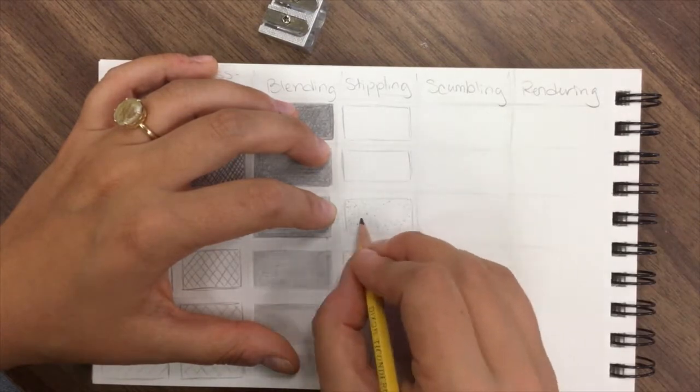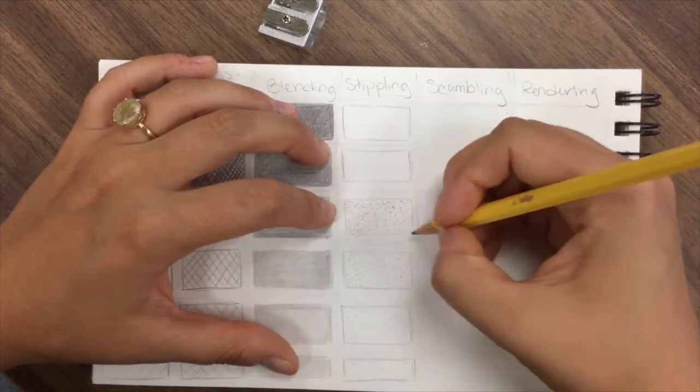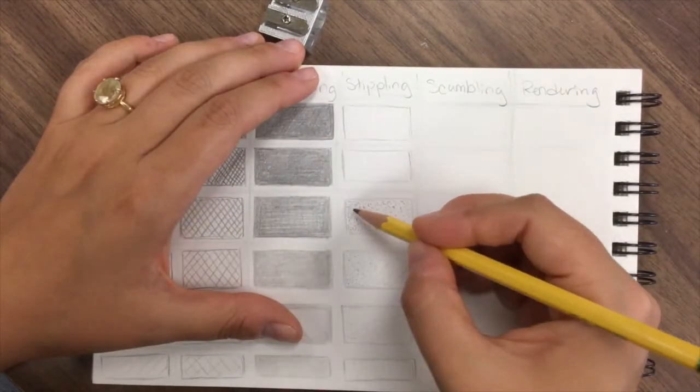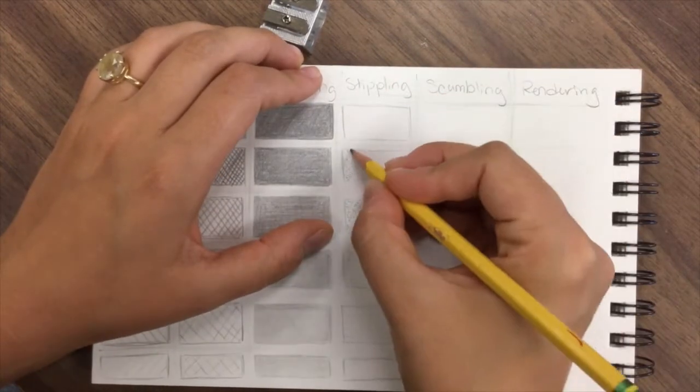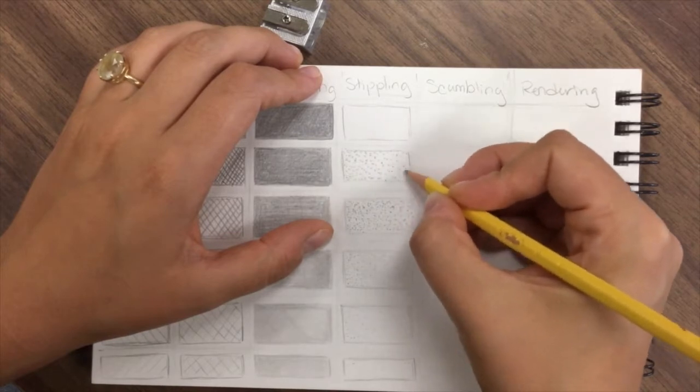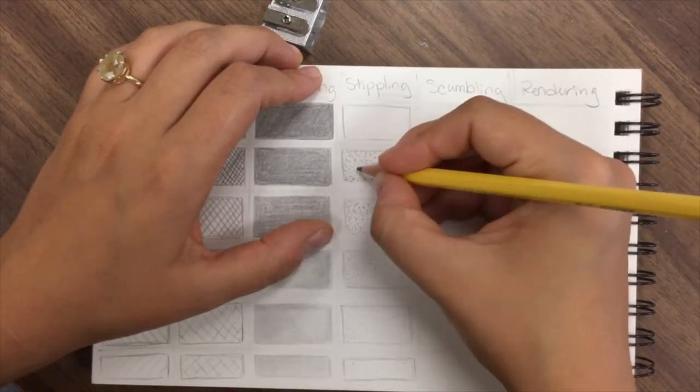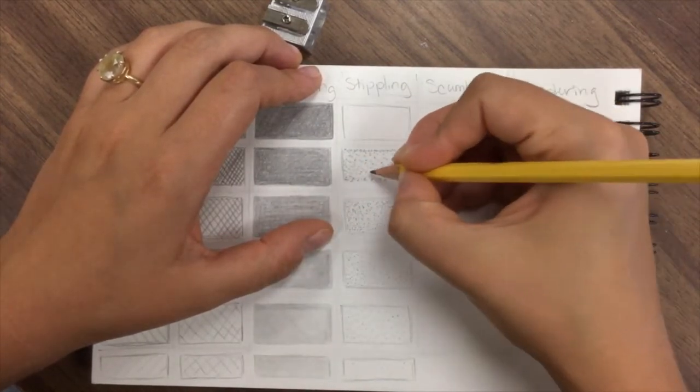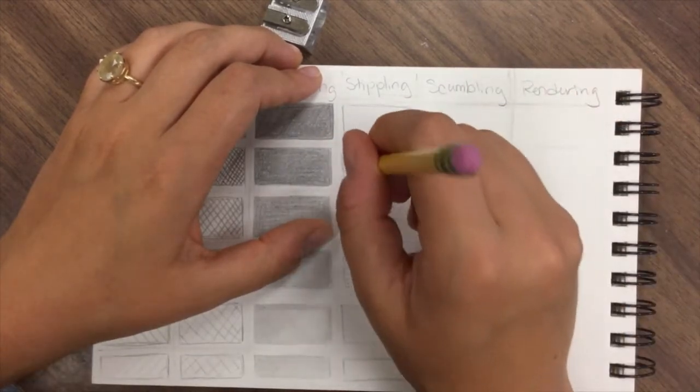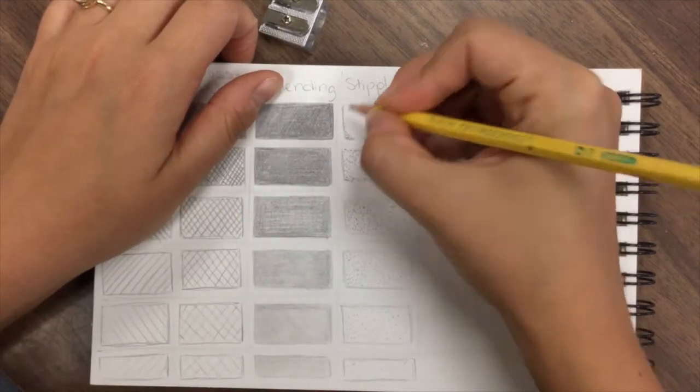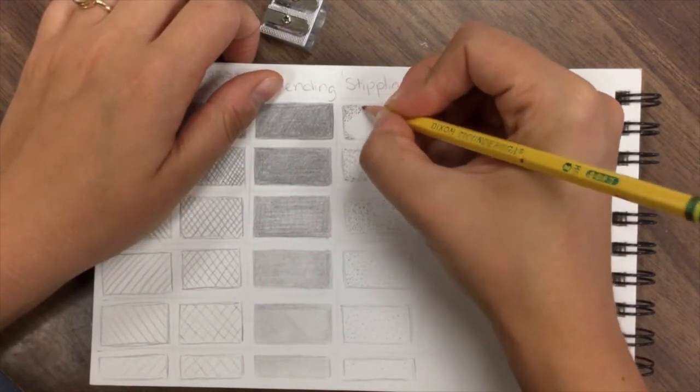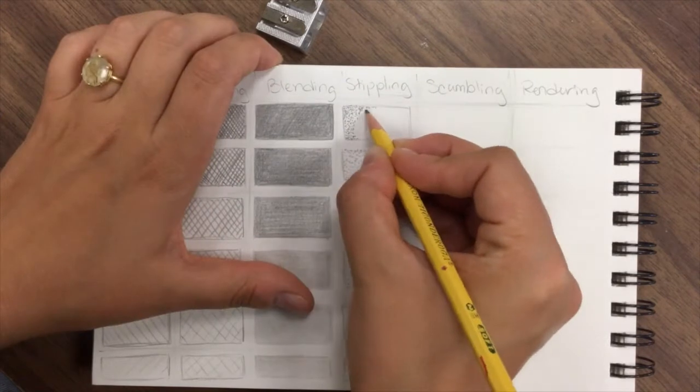Notice that you want to really space those dots, and then every time you go up in darkness, just fill in a few more dots. Overall, stippling is achieved by applying small dots to build up darker values. The closeness of the dots will determine the value you make. It can actually cause your wrist to hurt.